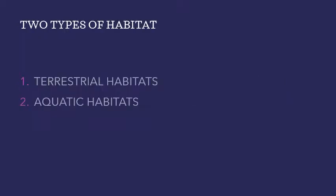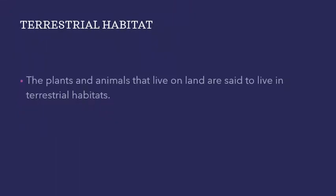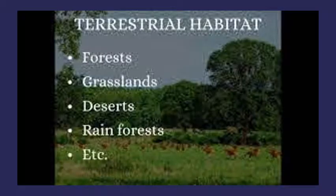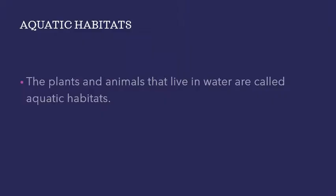There are two types of habitats: terrestrial habitats and aquatic habitats. Terrestrial habitat means the plants and animals that live on land are said to live in terrestrial habitats. Examples of terrestrial habitats are forests, grasslands, deserts, rainforests, and mountain regions. Aquatic habitats are the habitats of plants and animals that live in water — lakes, rivers, and oceans are some examples. There are large variations among terrestrial habitats located in different parts of the world.